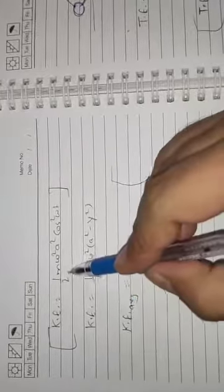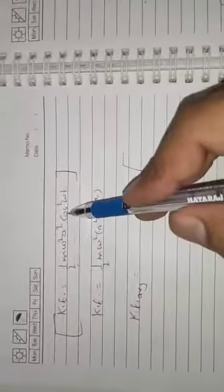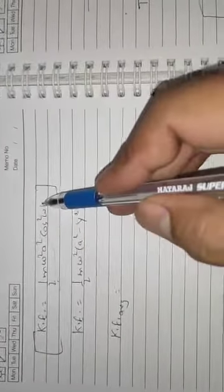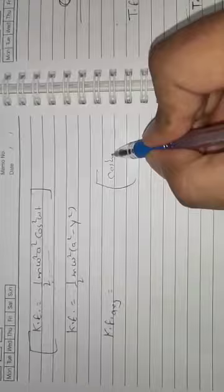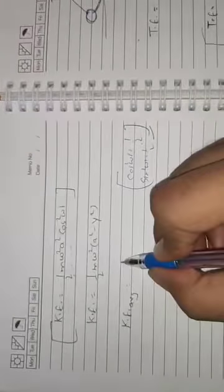Now for the average kinetic energy: the average of cos²(ωt) is 1/2. Substituting this: average KE = ½mω²a² × (1/2) = ¼mω²a². We can also write this as half of the total energy: average KE = E_total / 2.